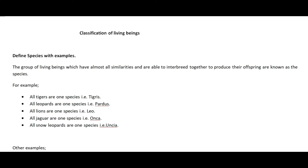First, I want to define species. Species are defined as the group of living beings which have almost all similarities and are able to interbreed together to produce their offspring. The group of animals or plants which are 99.99 percent similar — just a negligible difference — and whose male and female can interbreed to reproduce offspring are known as a species.